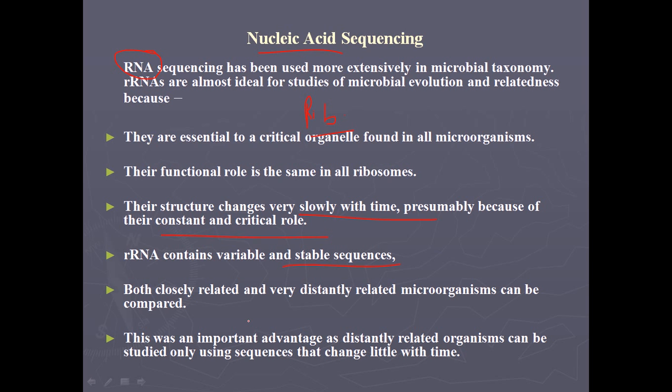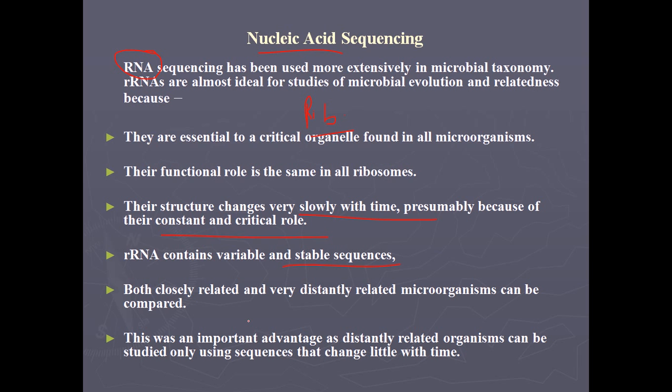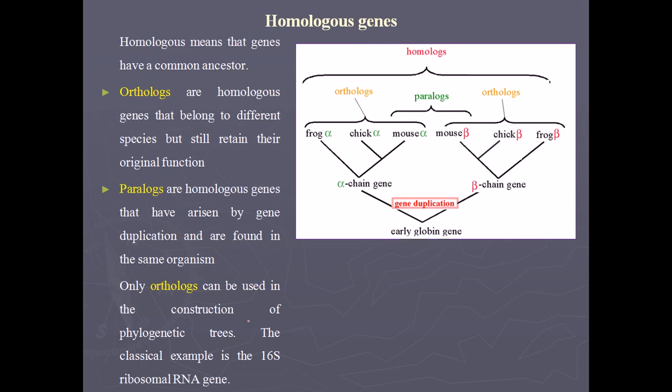That's why we are using rRNA sequencing — specifically rRNA, not other types. Among the rRNAs — 16S, 23S, and others — we use 16S rRNA because it is not huge in nature. It is really handy for us to use, as some rRNAs are really big and some are really small, but 16S is neither too big nor too small.